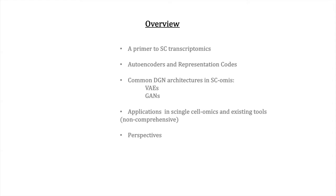In deep learning applications in general, but also in transcriptomics. Then I'll move to some common architectures used in single-cell transcriptomics, which are of the deep generative network types. Specifically, I'm going to talk about variational autoencoders and adversarial networks. Finally, I'm going to talk about different applications of single-cell omics existing tools, which by necessity is not going to be a comprehensive list. I will finish up with some perspectives of where we think the field is moving and what are some challenges in the future.